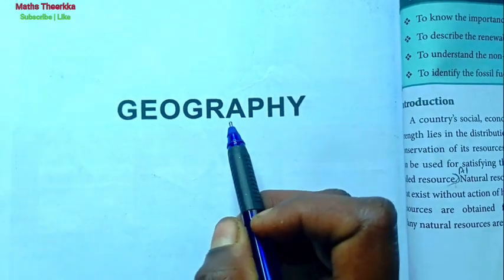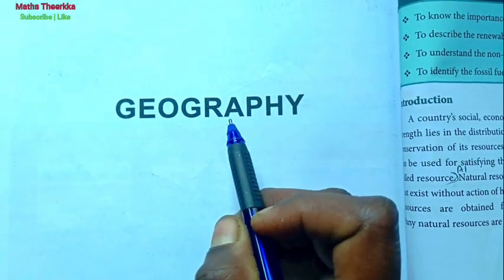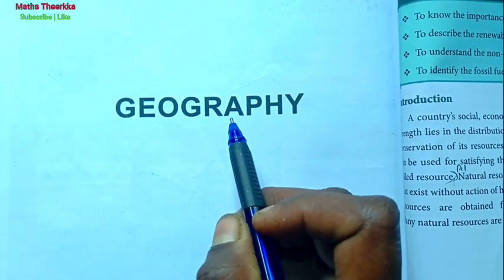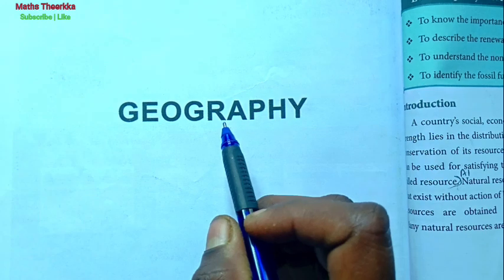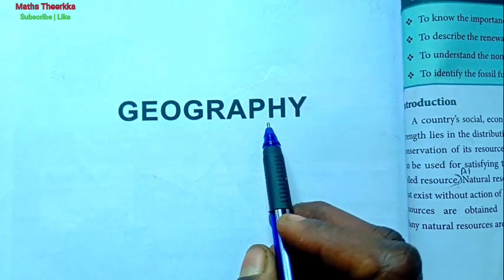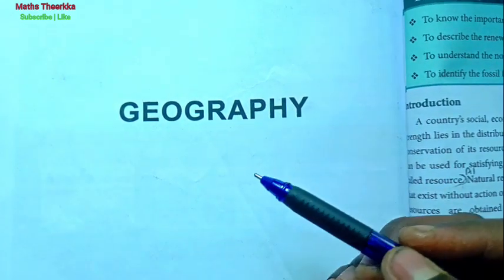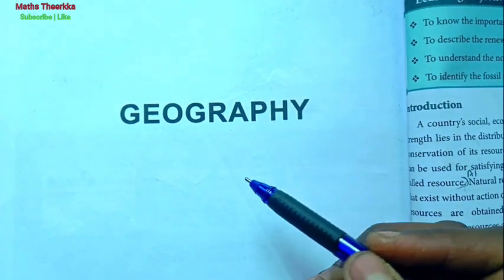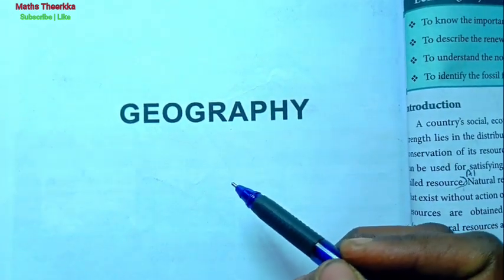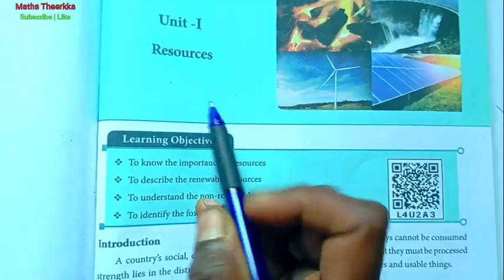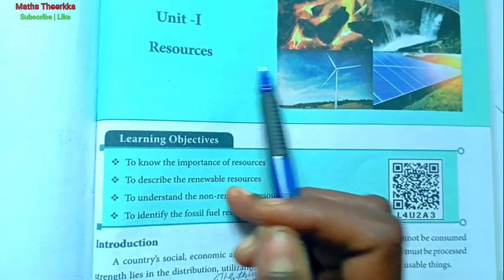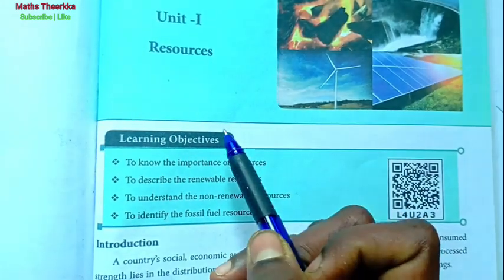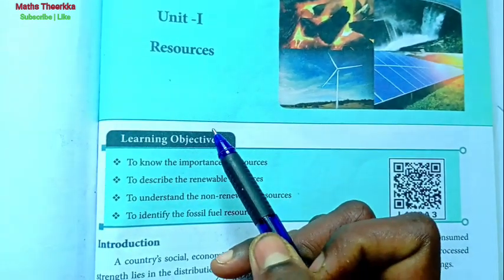Hello students, welcome to Max Thirika channel. 7th standard Samacheer book Term 2, Social Science Geography, Unit 1 lesson. We will look at the one word answers from the book. So Unit 1 Resources lesson — let's see the one word answers.